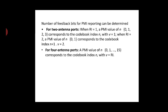For the two-port antenna, if RI equals 1, the value N ranges from 0 to 3, corresponding to codebook index N with V equal to 1. When RI equals 2, the value N belongs to 0 or 1, and for RI equal to 2 the codebook index N ranges from 0 to 1, corresponding to codebook index N+1 for V equal to 2.